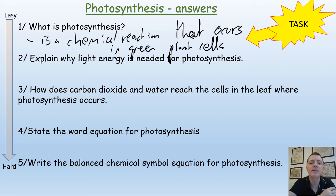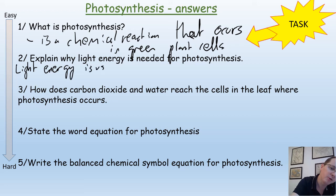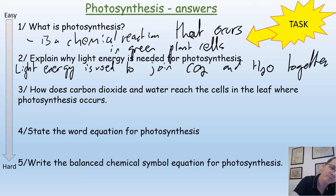Why is light energy needed for photosynthesis? Well, the light energy is used to join carbon dioxide and water together to produce glucose and oxygen.